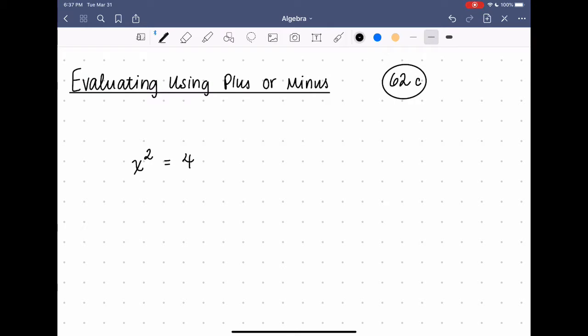Okay, let's talk about evaluating using plus or minus. So, look at this equation here. x squared equals 4.